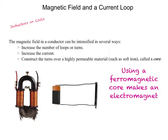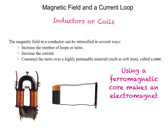However, if we coil up that wire and make several loops in it and then run a current through it, we can intensify that magnetic field. This is because the magnetic flux lines add together — the field increases with each added loop. When a conductor is formed into many loops like a coiled spring and current flows through it, it develops an intensely strong magnetic field. We call these devices inductors or coils. We can intensify the magnetic field by increasing the number of loops or turns, by increasing the current, or by constructing the turns over a highly permeable material such as soft iron, which we call a core.